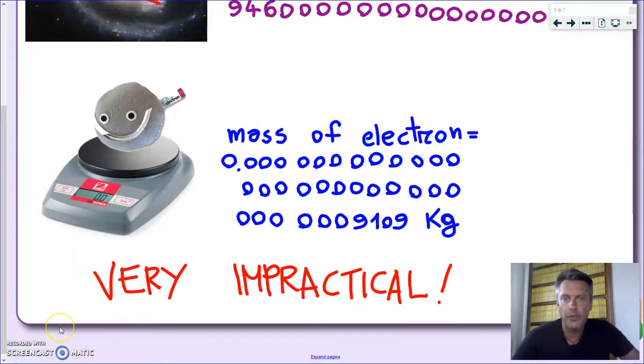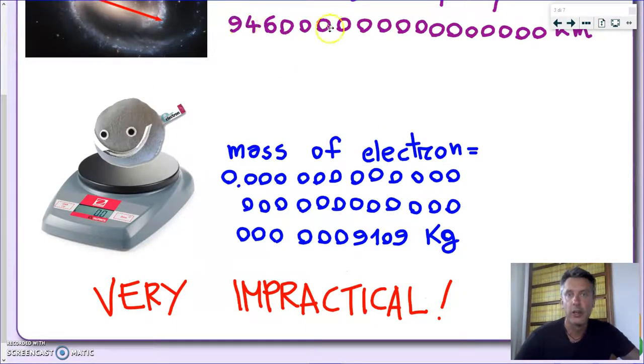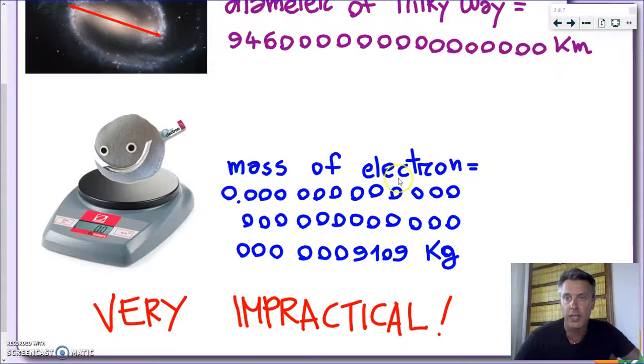And I hope at this point, it's really clear for you that using these numbers in what we call the full form, so this is the full form of the mass of the electron, is very impractical. Every time you have to write these numbers, you have to write all these zeros, which are mostly useless, and let alone imagine when you have to do operations with them.